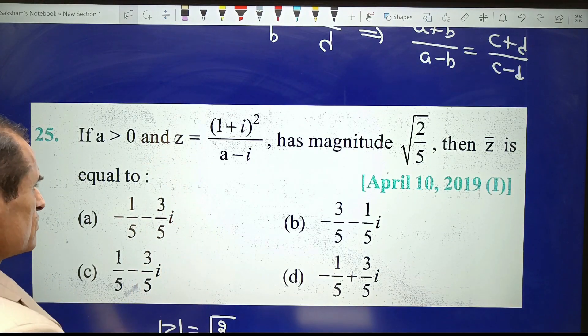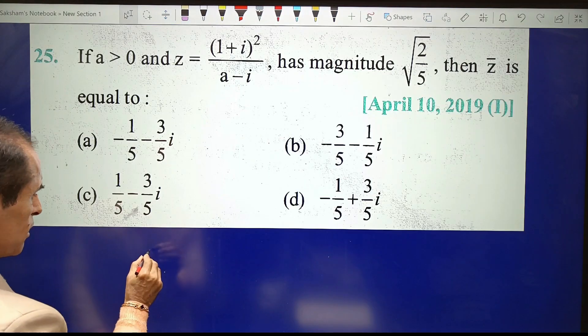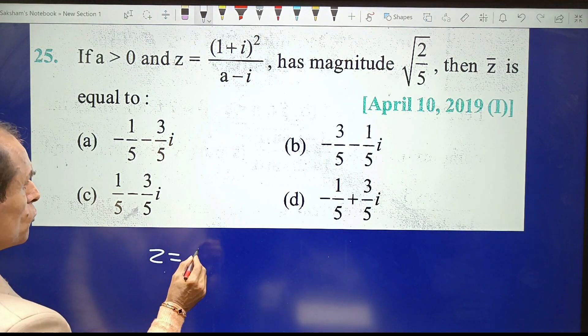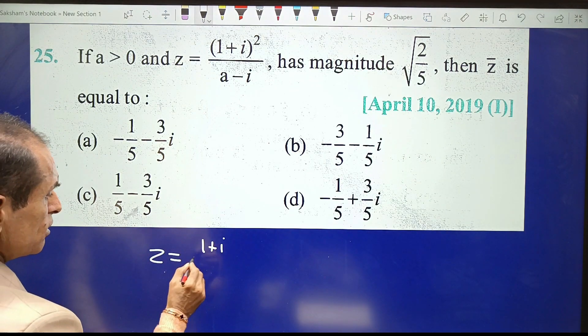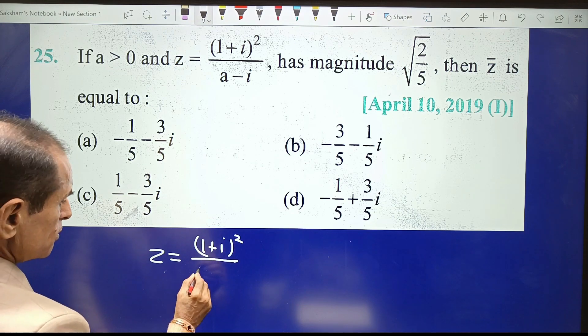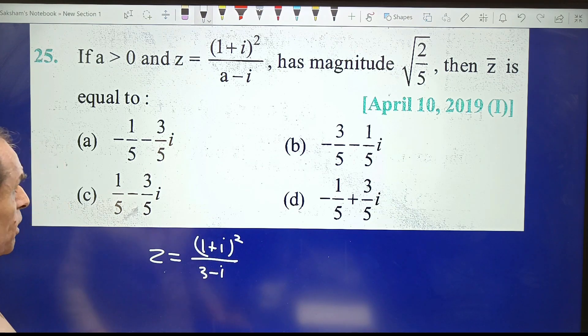And now writing a = 3, I conclude that Z = (1+i)²/(3-i).